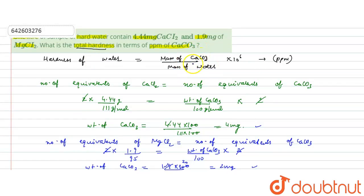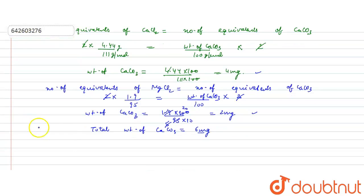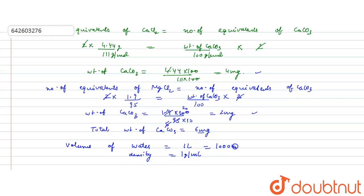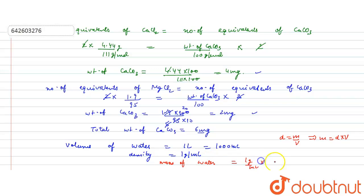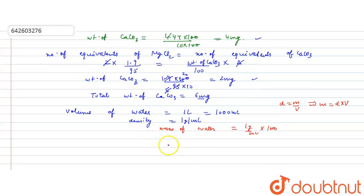To calculate hardness, we also need the mass of water. Since the sample volume is 1 liter, and the density of water is 1 gram per mL, and 1 liter equals 1000 mL, we use mass = density × volume = 1 g/mL × 1000 mL = 1000 grams.